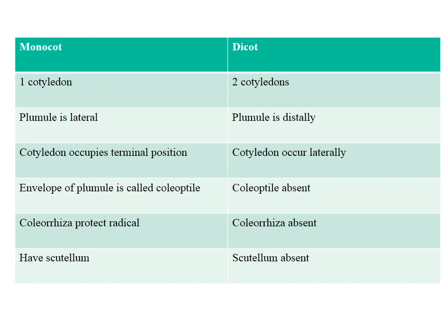So these are the basic differences of the embryo of monocot and dicot. Monocots have one cotyledon while dicots have two. The plumule is lateral in monocots and distal in dicots. Cotyledon occupies the terminal position in monocots and occurs laterally in dicots. We can observe the envelope of the plumule, called coleoptile, in monocots, but it is absent in dicots. Similarly, the coleorhiza that protects the radicle can also be observed in monocots. Monocots also have a scutellum, which is absent in dicots.